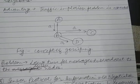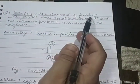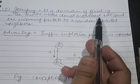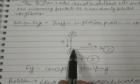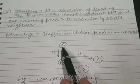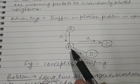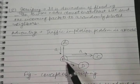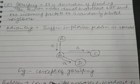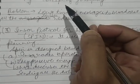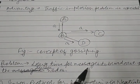To overcome the problems of flooding, the second protocol proposed is called gossiping, and it is a derivation of the flooding protocol. In gossiping, nodes do not broadcast; instead they send incoming packets to a randomly selected neighbor rather than all neighbors. The advantage is that the traffic implosion problem is avoided. However, the problem with gossiping is transmission delay, because it takes a long time for messages to propagate through the network.